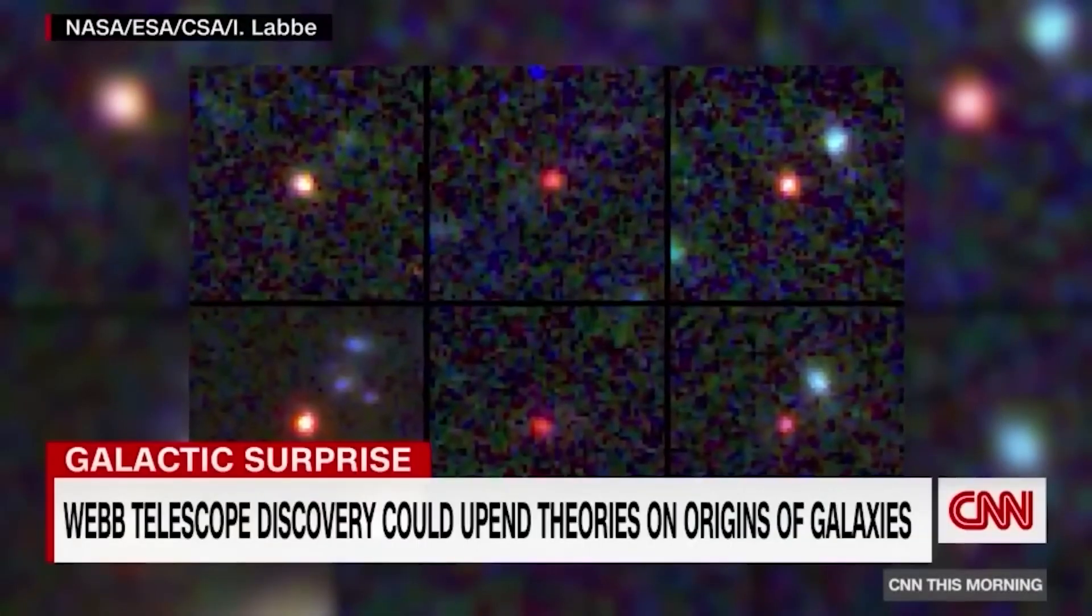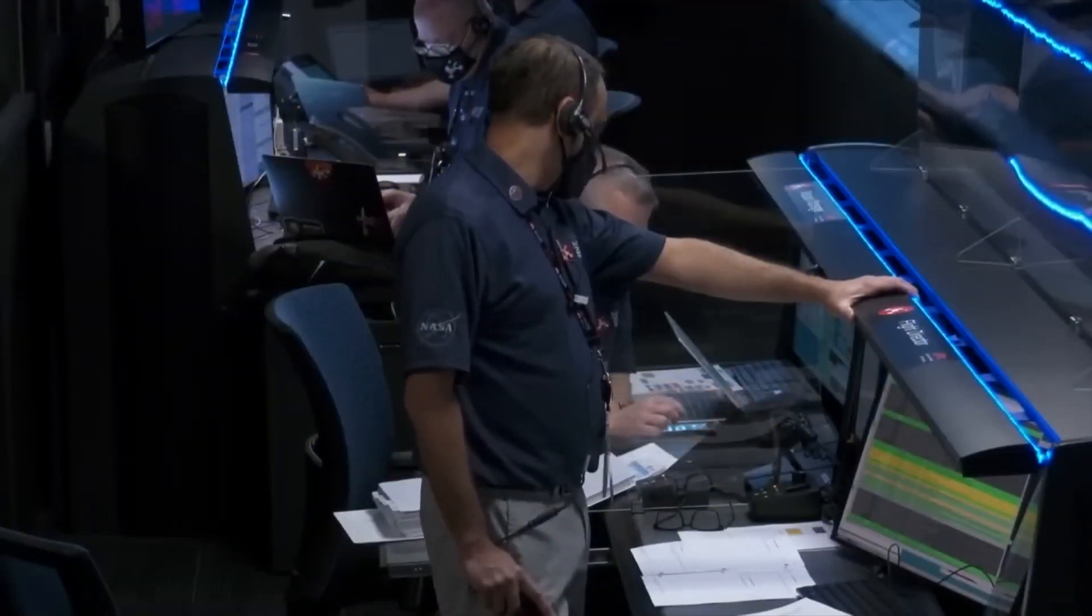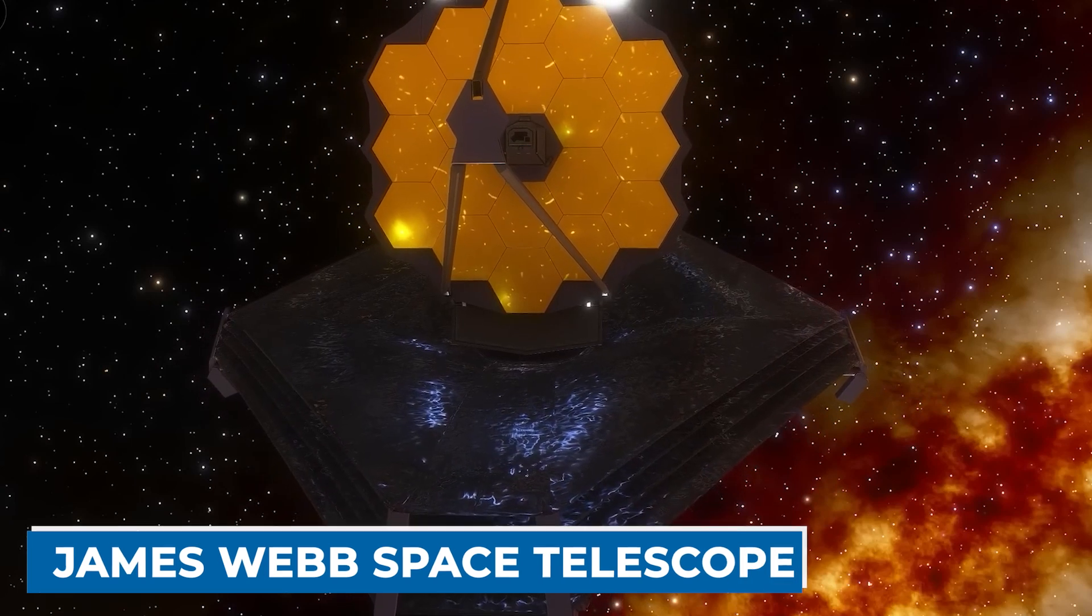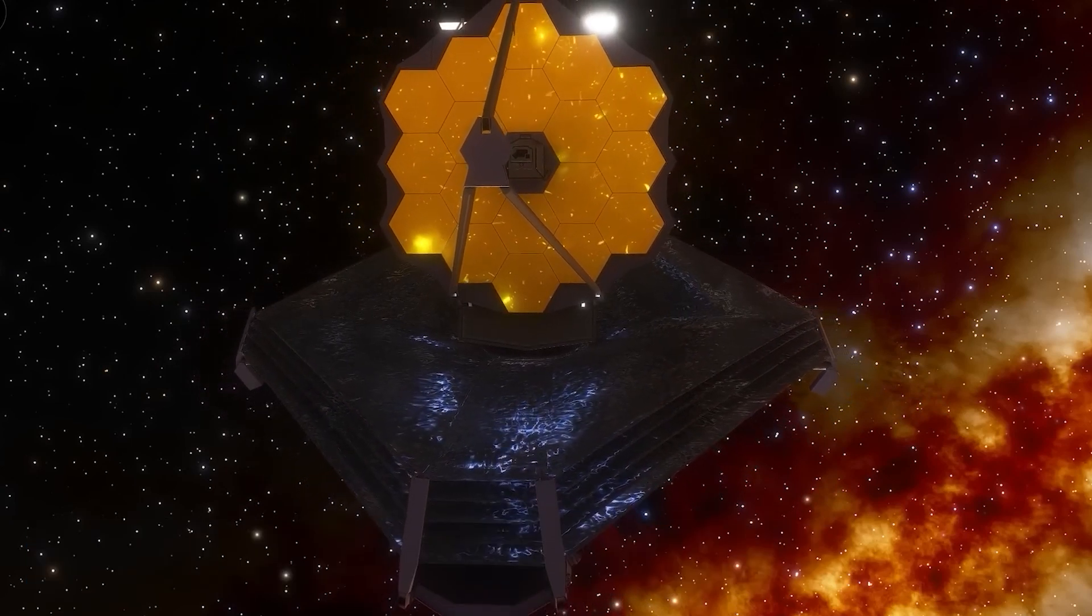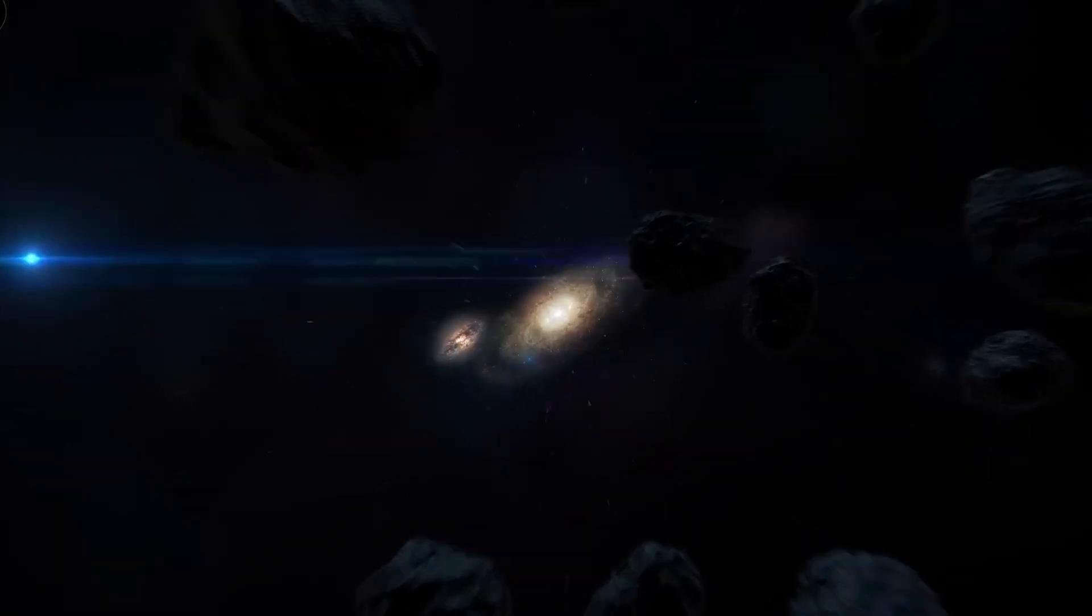Even Michio Kaku has talked about this new finding. A new study released in February said that the James Webb Space Telescope found six huge galaxies that formed soon after the Big Bang. These galaxies surprise scientists because they formed much faster than we thought they would.